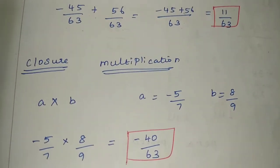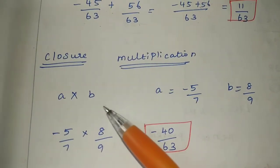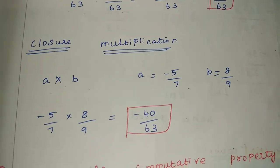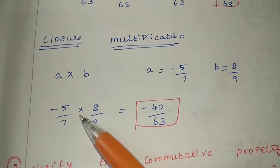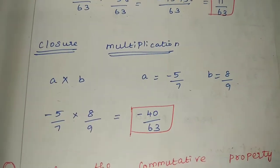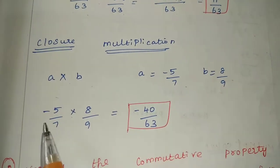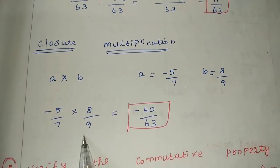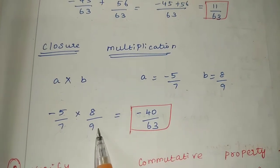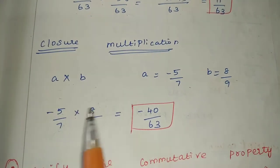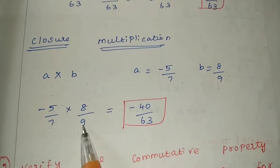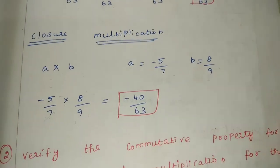Now for closure property, multiplication is next. A into B: minus 5 by 7 into 8 by 9. We can directly multiply — 7 and 8 cancel, and then 5 and 9. Multiplying gives minus 40 by 63. The result is minus 40 by 63, which is a rational number, so closure property is verified for multiplication.